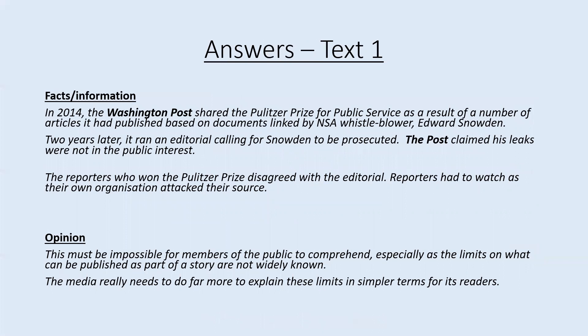So we'll have a look through the texts. Here are the parts which I felt in text one came under facts and information. I chose the following: In 2014, the Washington Post shared the Pulitzer Prize for public service as a result of articles published based on documents linked by NSA whistleblower Edward Snowden. Two years later it ran an editorial calling for Snowden to be prosecuted. The Post claimed his leaks were not in the public interest. The reporters who won the Pulitzer Prize disagreed with the editorial. Reporters had to watch as their own organization attacked their source. The parts I felt came under opinion were: 'This must be impossible for the public to comprehend, especially as the limits on what can be published as part of a story are not widely known,' and 'The media really needs to do far more to explain these limits in simpler terms for its readers.' How did you do?